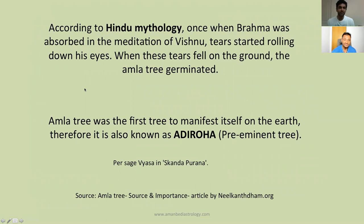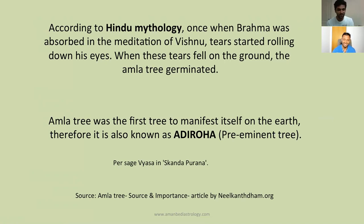According to Hindu mythology, once Brahma was absorbed deep in meditation of Lord Vishnu, tears started rolling out from his face. When these tears fell on the ground, the amla tree was originated. It is mentioned by sage Vyasa in the Skanda Purana that amla trees were the first tree to manifest on the earth. Therefore it is known as Adiroha — the first pre-eminent tree.